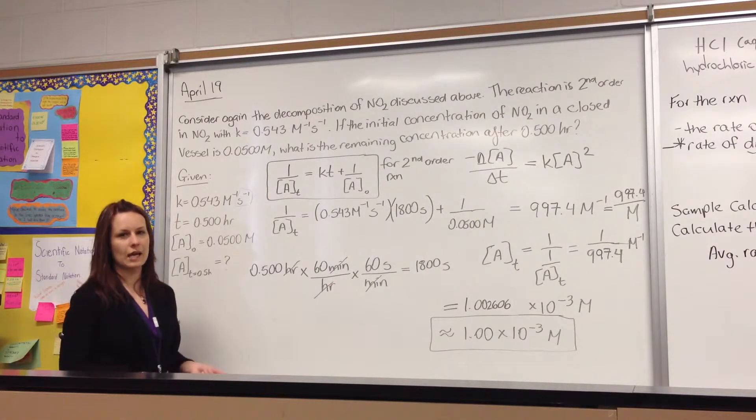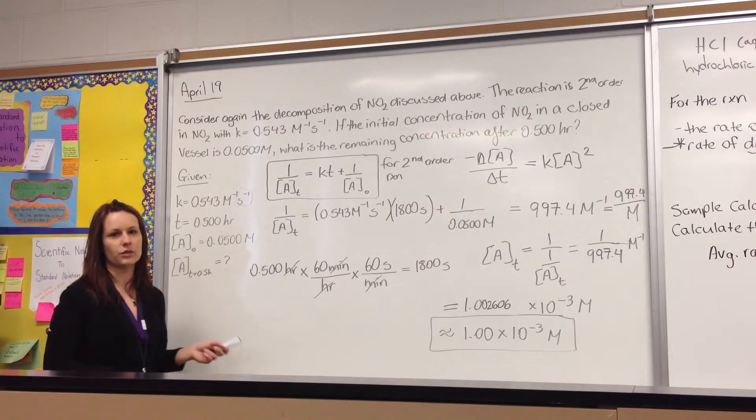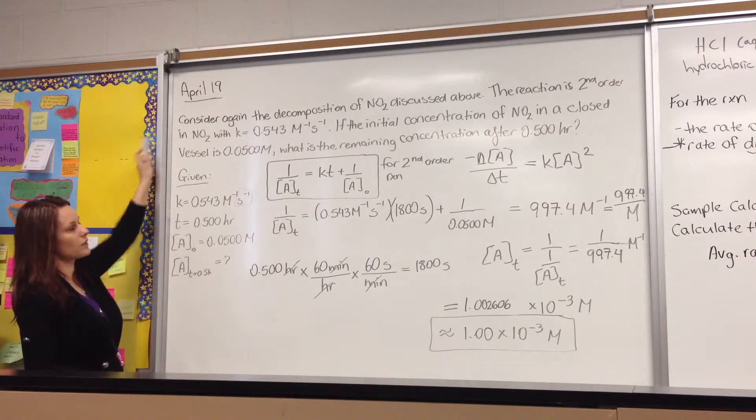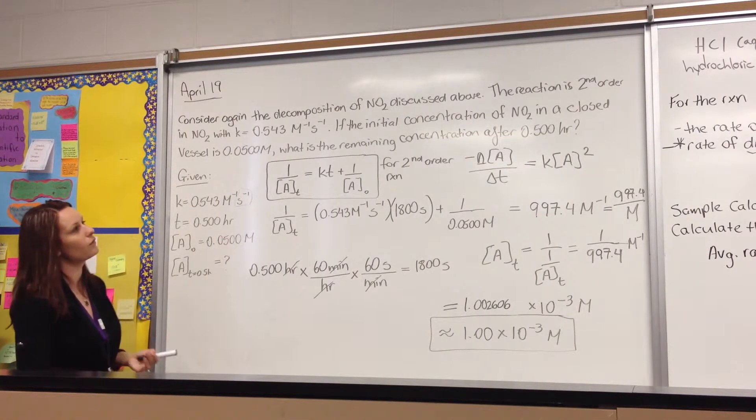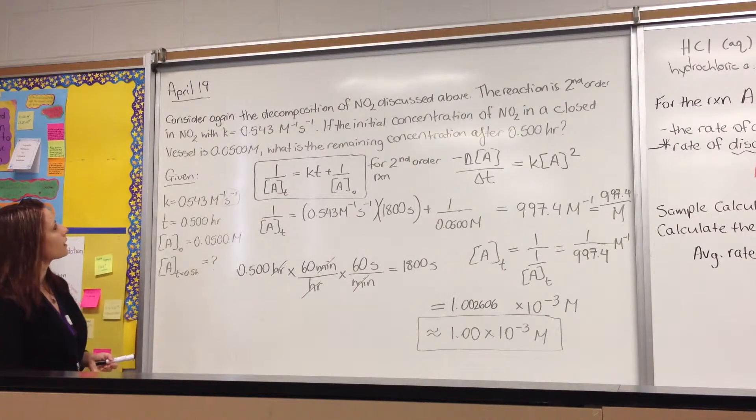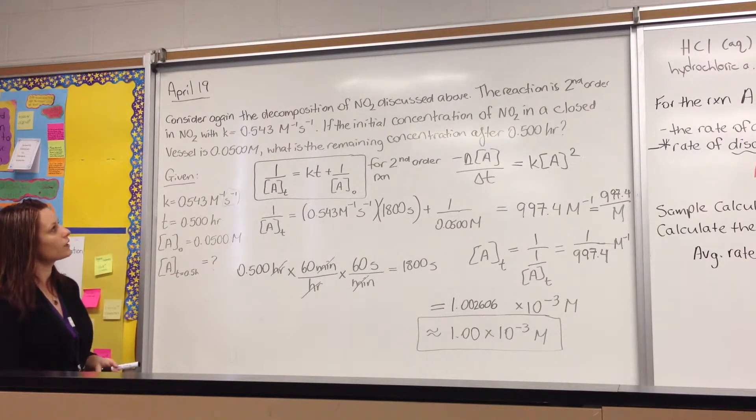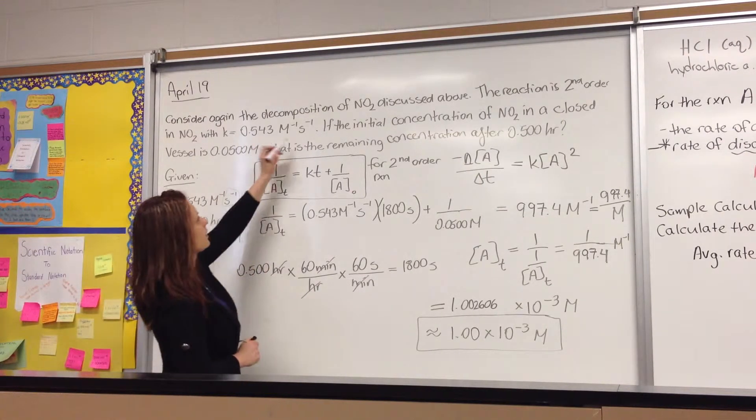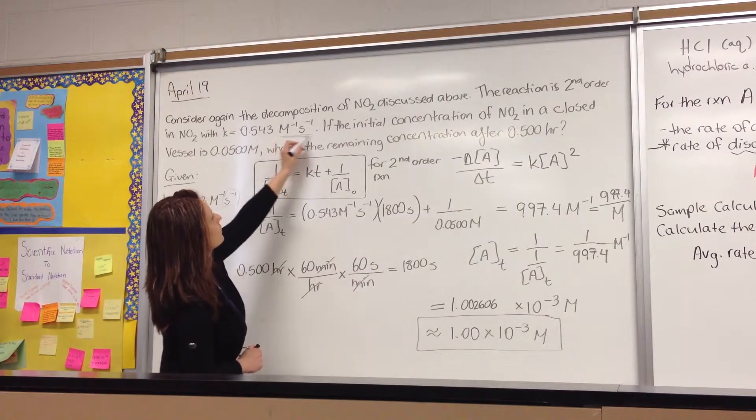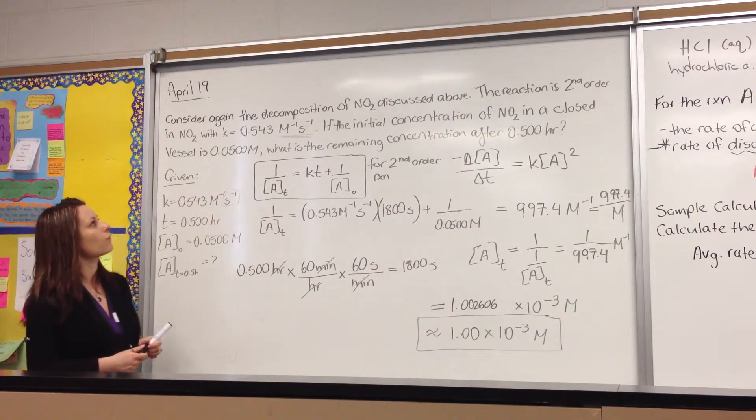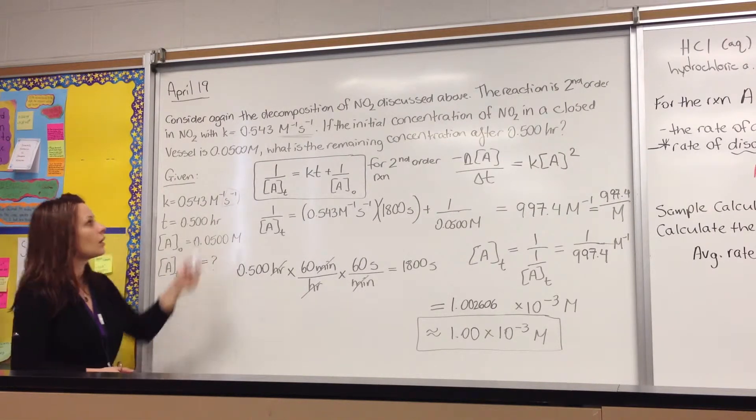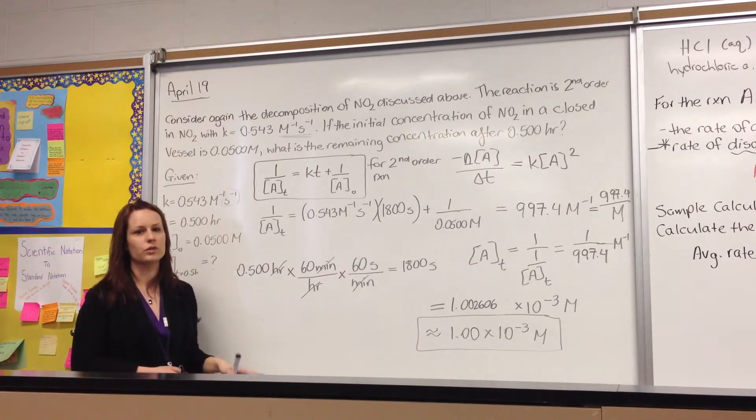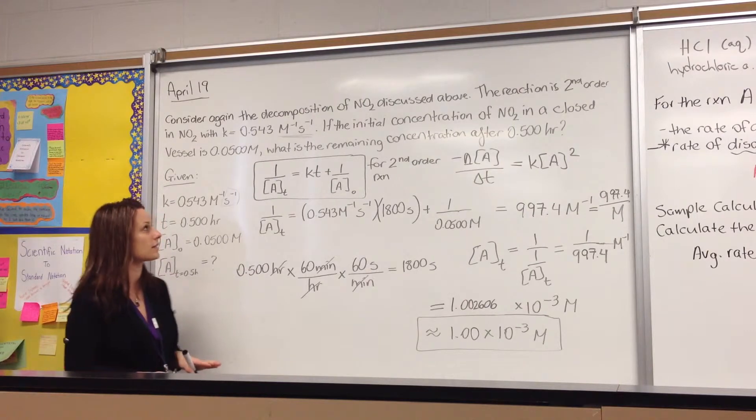Okay, so let's look at an example of using second-order integrated rate law expression. Let's consider again the decomposition of nitrogen dioxide discussed above. The reaction is second-order in nitrogen dioxide with k rate constant equal to 0.443 per molar per second. Another thing to notice here are the units. The units for a first-order rate constant would be per second. The units for a second-order rate constant are per molar per second. That's also another clue to look at if you're trying to figure out whether you have first-order or second-order.